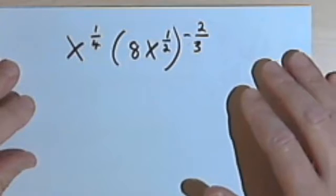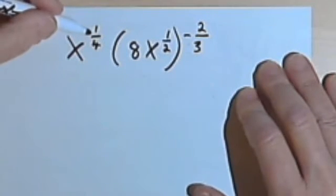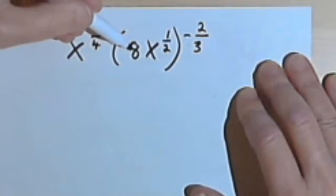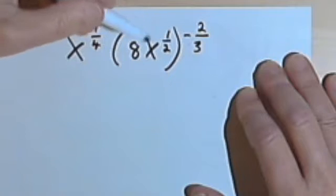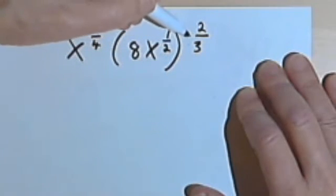Here I've got an expression: x to the one-quarter times 8x to the one-half, and that 8x to the one-half is raised to the negative two-thirds.